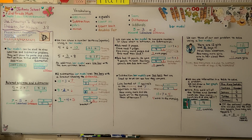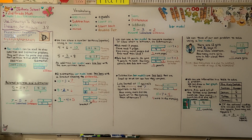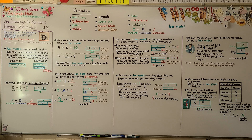Remember: addition bar models have just one bar going across with a split in it, and subtraction bar models have two bars lined up with a bracket to show the missing space. Our next lesson, 3.9, will use equations to represent problems. Have a wonderful day and I hope to see you next time. Bye!